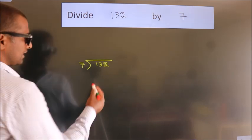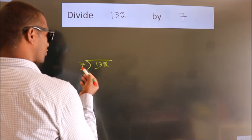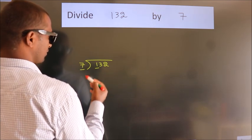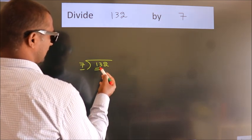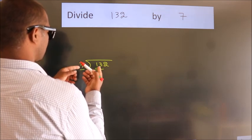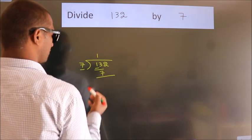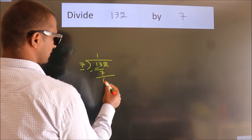Next, here we have 1, here 7. 1 is smaller than 7, so we should take 2 numbers: 13. A number close to 13 in the 7 table is 7 times 1 equals 7. Now we should subtract. We get 6.